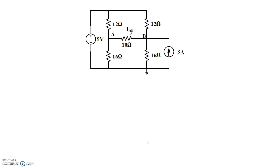Let's start out by arbitrarily defining the currents that flow through the different resistors. I'll call those I1, I2, I3, and I4. We have a reference node at the bottom — that's the ground node, that's our reference node.